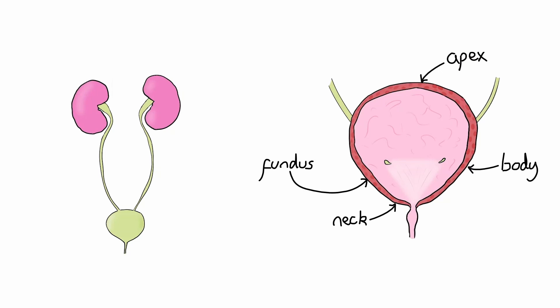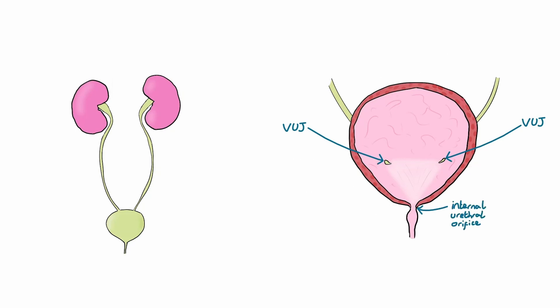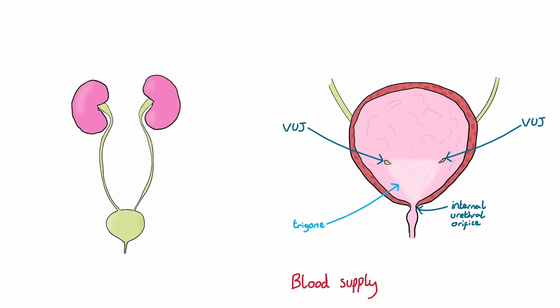The inner lining of the bladder contains folds, called rugae, which allow the bladder to expand as it fills. Urine will enter the bladder via the ureters at the vesicoureteric junctions and exits via the internal urethral orifice. These three openings form an anatomical area known as the trigone. The main blood supply to the bladder is from the superior vesical artery, which is a branch of the internal iliac artery.